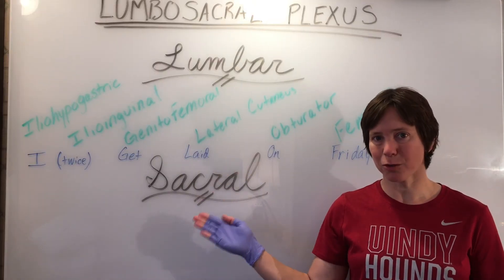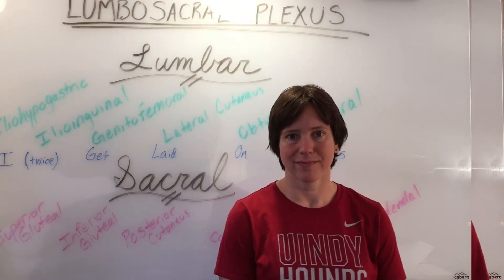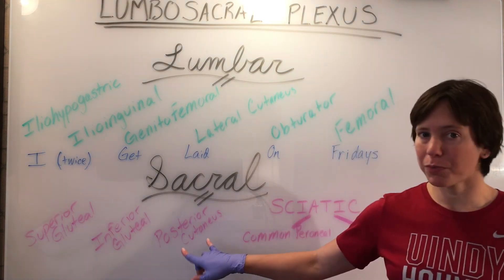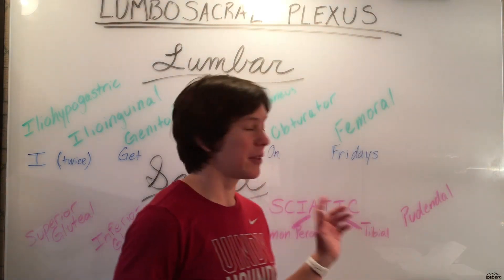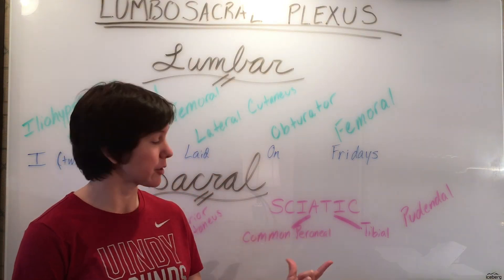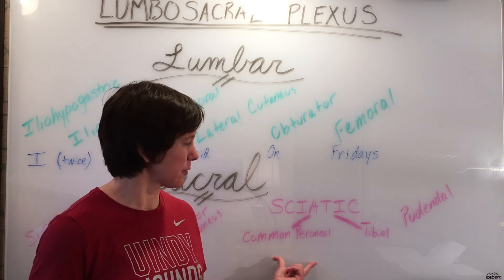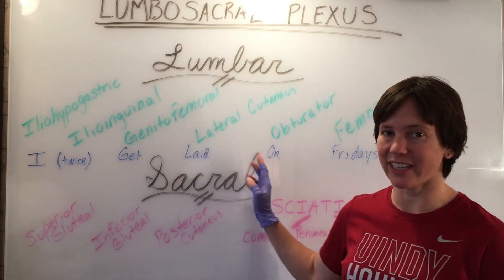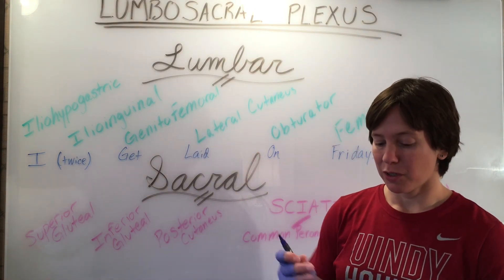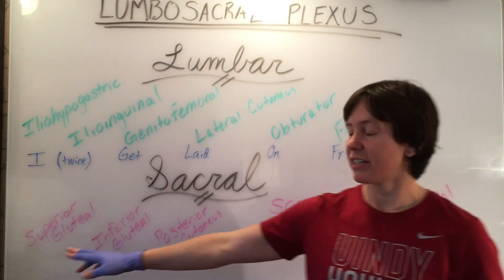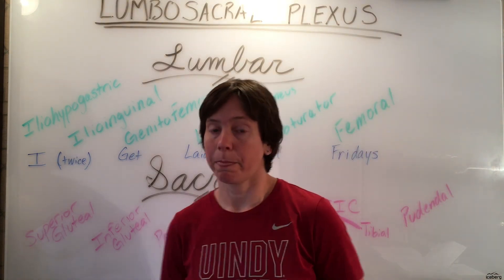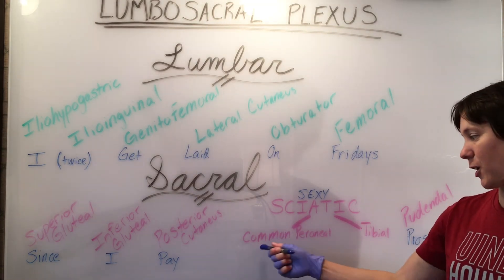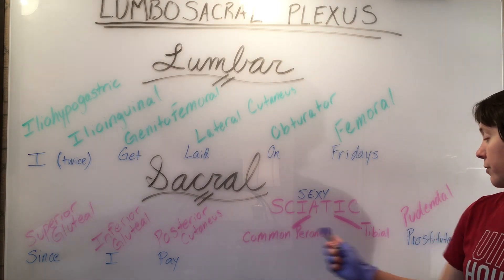Now we'll go over the sacral plexus major nerves and continue this mnemonic. The main nerves of the sacral plexus include the superior gluteal nerve, inferior gluteal nerve, posterior cutaneous nerve, the sciatic nerve — which divides into two branches: the common peroneal (also known as common fibular) nerve and the tibial nerve — and finally the pudendal nerve. Continuing the mnemonic: 'I twice get laid on Fridays since I pay sexy prostitutes.' To remember common peroneal and tibial, you can add 'common townspeople' or 'curvy titty prostitutes.'